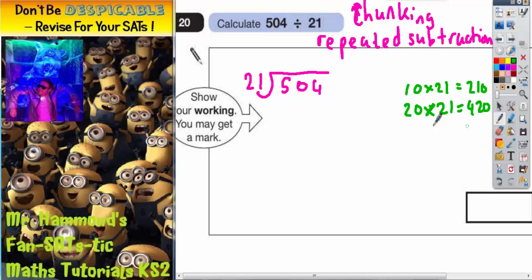Now we can use this idea to help us. So what can we subtract from 504? Well, we could subtract 420. So right at the side what you subtract is. So we subtract in a chunk of 20 21's. That would be 420.